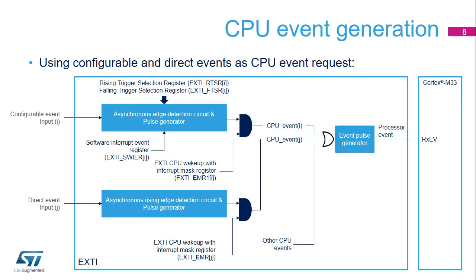This figure explains the various stages enabling the conversion of a peripheral event active edge into a processor event. Both configurable and direct peripheral events can be configured to issue events to the CPU steered to its RxEV input. Configurable event active edge is programmable in the EXTI_RTSR and EXTI_FTSR registers, while direct events are always sensitive to a rising edge. Software can emulate a configurable event by writing to the EXTI_SWIER register. Unlike interrupt requests, the CPU has a unique event input, so all event requests are OR'd together before entering the event pulse generator.